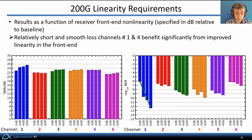Looking at the linearity requirements for a 200 Gbps receiver versus a baseline of 0 dB, we see that the relatively short and smooth loss channels, number one and four, benefit significantly from improved linearity in the front end.